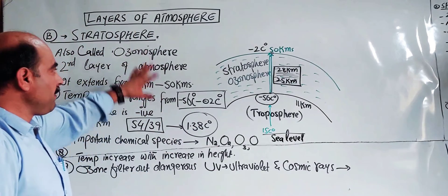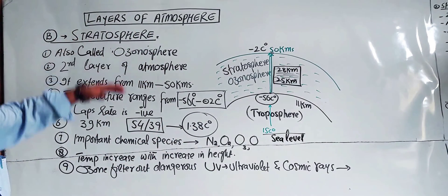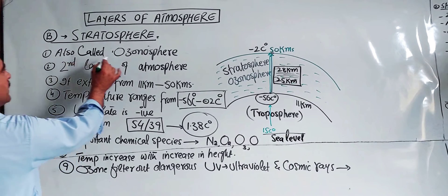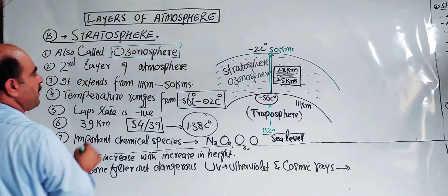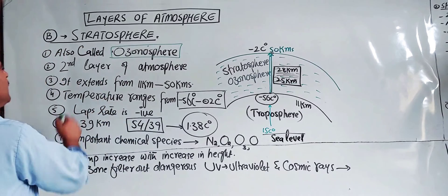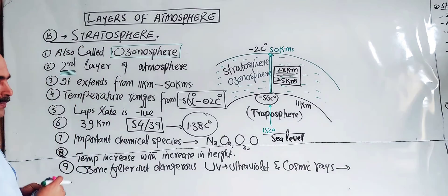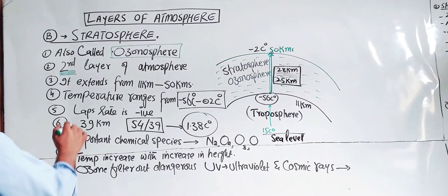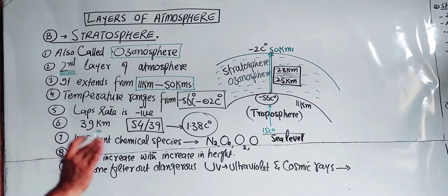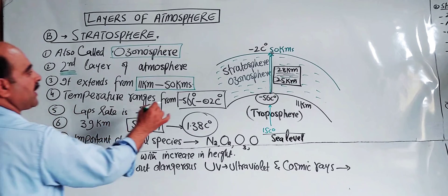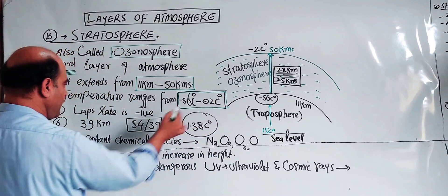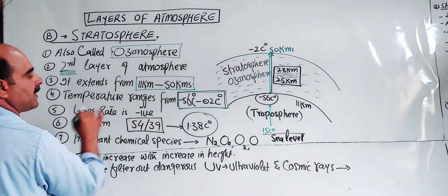So students, these were all about the second sphere of the atmosphere, which is stratosphere. Stratosphere is also called ozonosphere because of the presence of ozone in this region from 25 to 28 km. It extends from 11 km to 50 km. The temperature range is minus 56 degrees C to minus 2 degrees C, which means the lapse rate is negative.